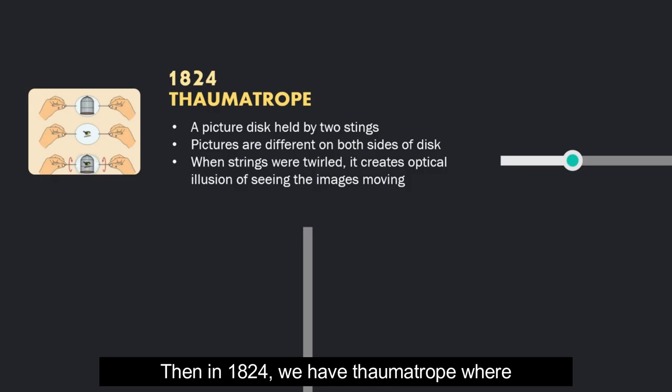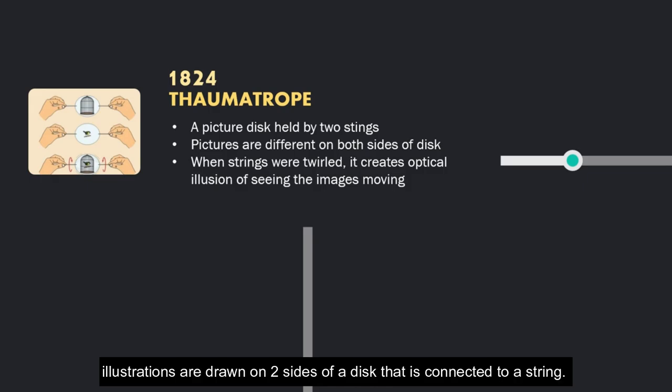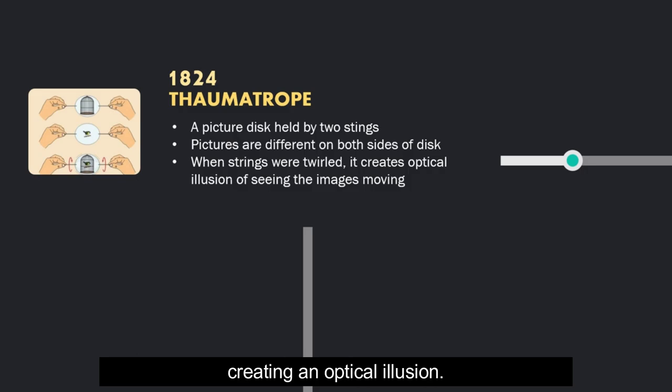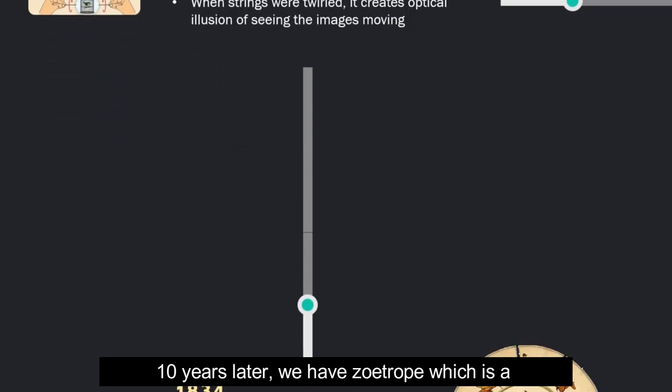Then, in 1824, we have the thaumatrope, where illustrations are drawn on two sides of a disc that is connected to a string. Animation is created when the strings are twisted, creating an optical illusion.